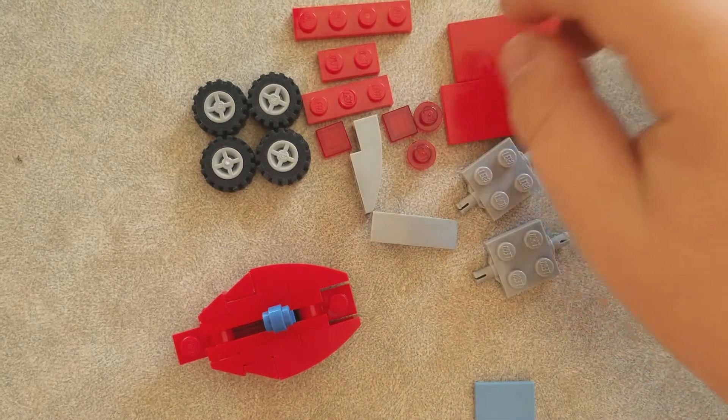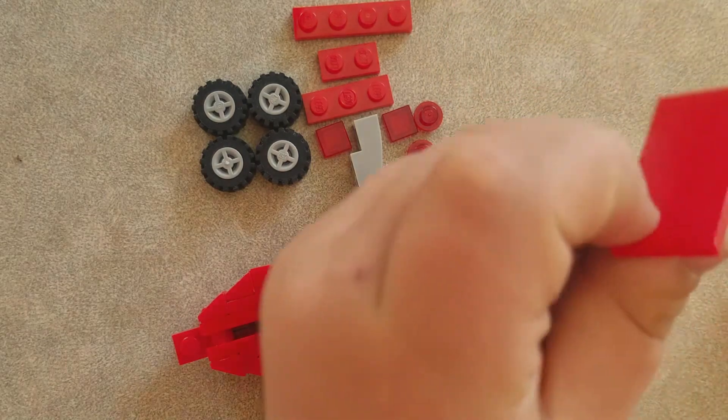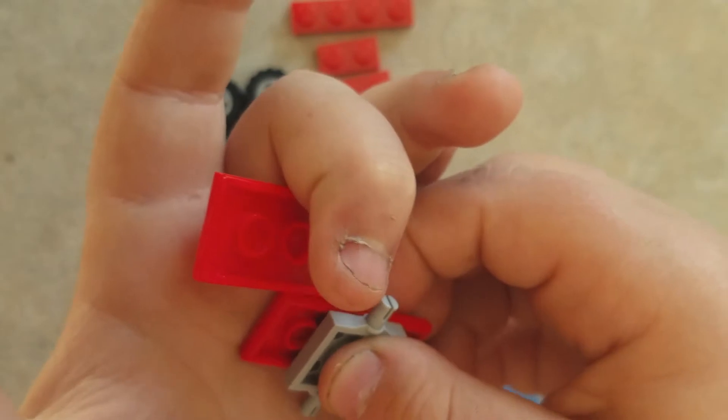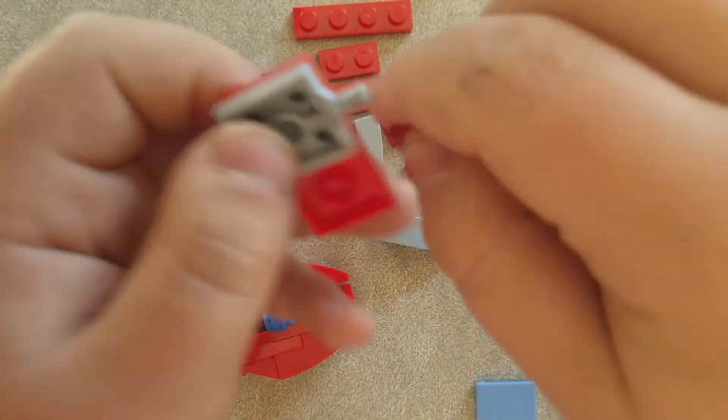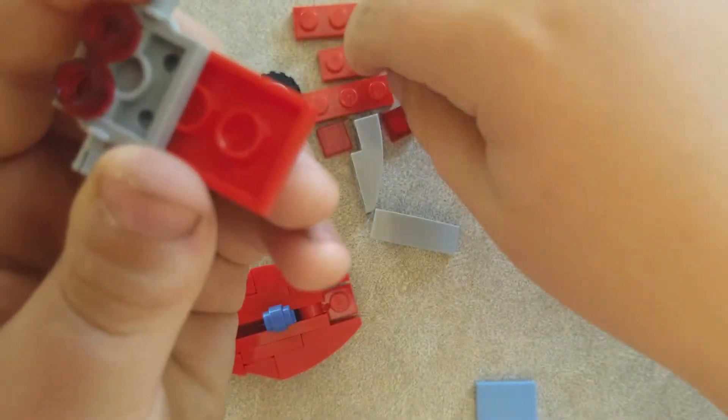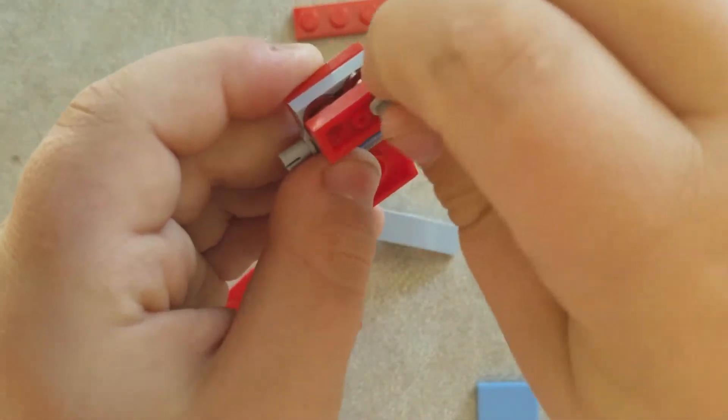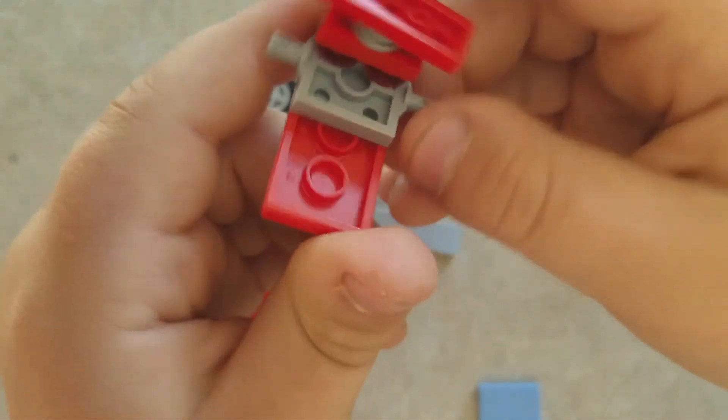And you get these pieces, these smooth plate pieces. Flip them upside down, put this one in the middle, then this one up the back like that. And put these on top of it, the studs. And put this one by two plate on the back, and this stud on the middle, and this one by three piece in the middle like that.